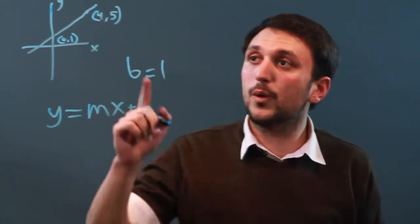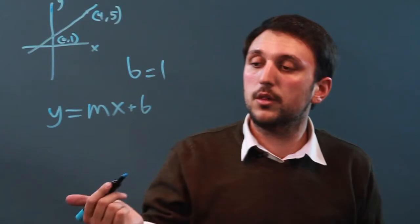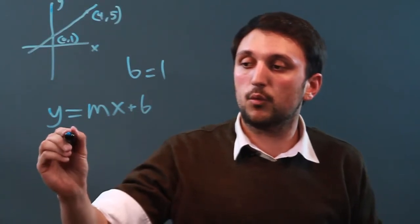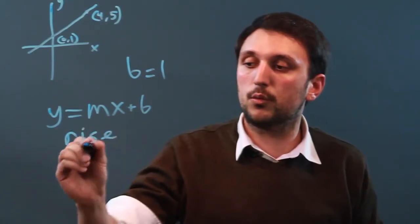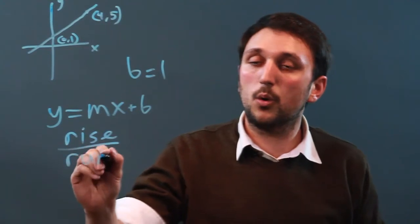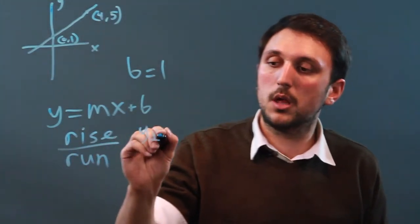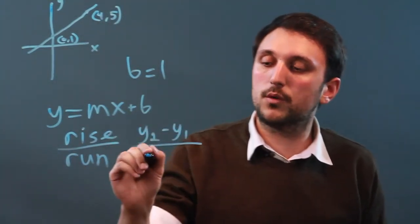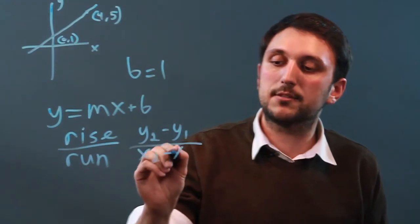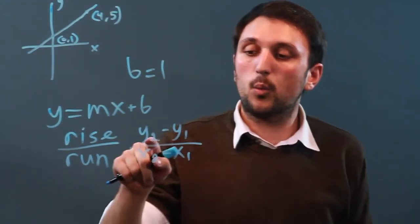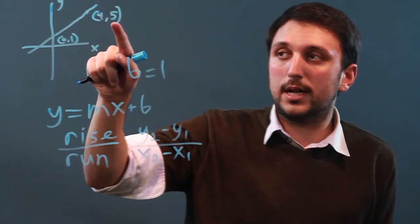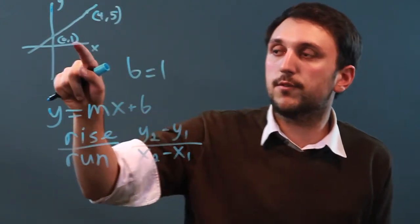Now, we need the slope. We need m. The slope formula is rise over run, or y2 minus y1 over x2 minus x1, where y2 is the second y-coordinate and y1 is the first y-coordinate.